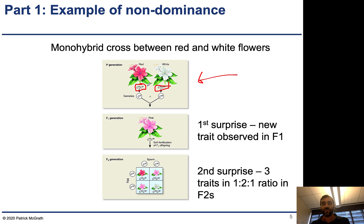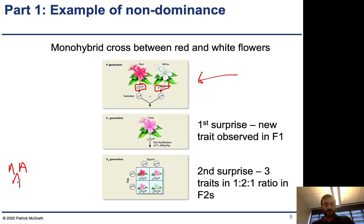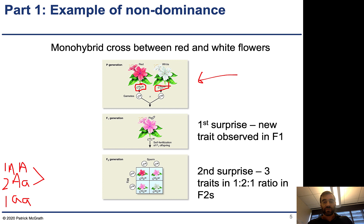If you intercross these F1 individuals, in a standard monohybrid cross you'd expect a 3:1 phenotype ratio, but here we get a 1:2:1 ratio instead. We see red, pink, and white — three categories — in a 1:2:1 ratio. The 1:2:1 ratio should remind you of the genotype ratio: one homozygote, two heterozygotes, and one recessive homozygote. In Mendel's crosses we group the two together to get a 3:1 phenotype. That's what happens when there is no dominance.